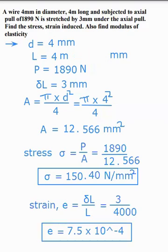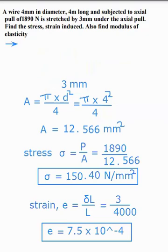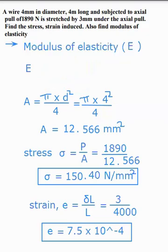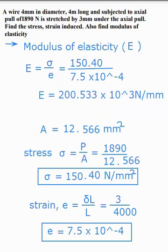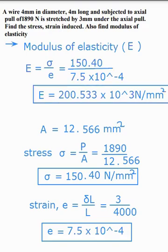Next, modulus of elasticity. Modulus of elasticity is denoted by capital E. Capital E is equal to stress divided by strain. So stress is 150.40 divided by strain 7.5 times 10 raised to minus 4. Then modulus of elasticity is equal to 200.533 times 10 raised to power 3 N per mm squared. This is the final answer.